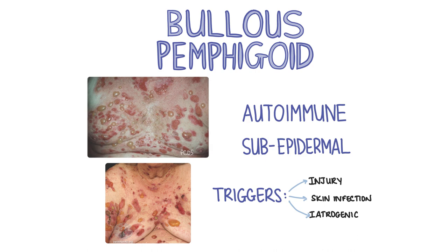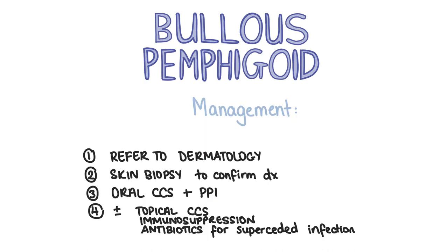In bullous pemphigoid the patient will report tense, fluid-filled blisters which rupture, forming crusted erosions. To manage bullous pemphigoid, the first step is referral to dermatology for biopsy and confirmation of the diagnosis. The first-line treatment is oral corticosteroids, and as patients will be given steroids for several weeks, they should be given alongside a PPI like omeprazole to prevent gastric erosions. Topical corticosteroids, immunosuppressants and antibiotics are also used.